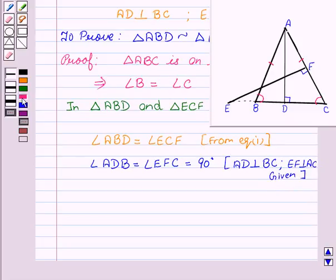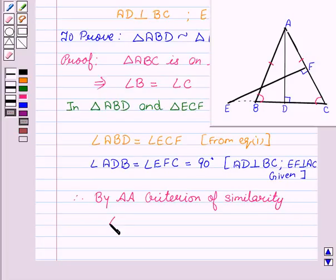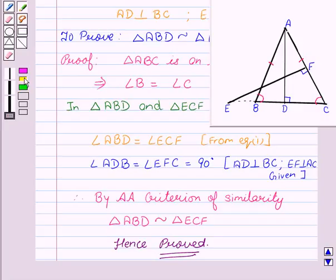Therefore, by AA criterion of similarity, triangle ABD is similar to triangle ECF. Hence proved that triangle ABD is similar to triangle ECF, which was the required result.